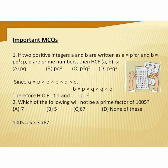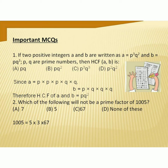As per CBSE latest exam pattern, from this chapter we have objective type questions including MCQ, case study questions, and assertion-reasoning type questions. Let us see some MCQ questions. Question 1: If two positive integers A and B are written as A = p³q² and B = pq³, where p and q are prime numbers, what is the HCF of A and B? Expressing A and B in expanded form, the HCF of A and B is pq². Option B is the correct answer.